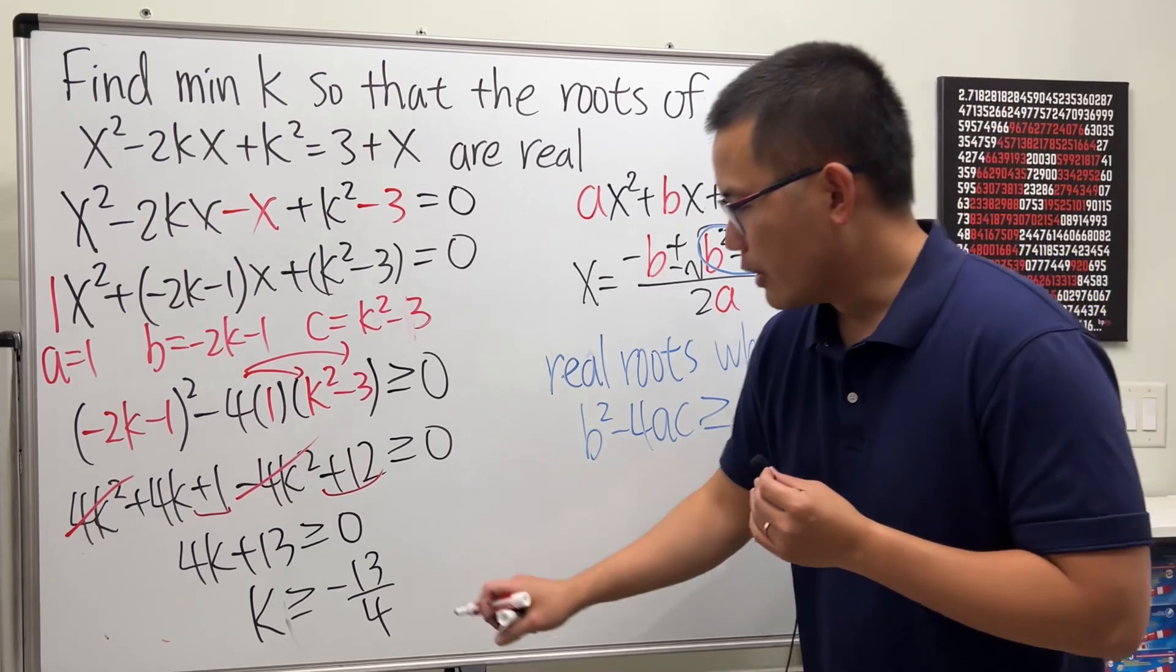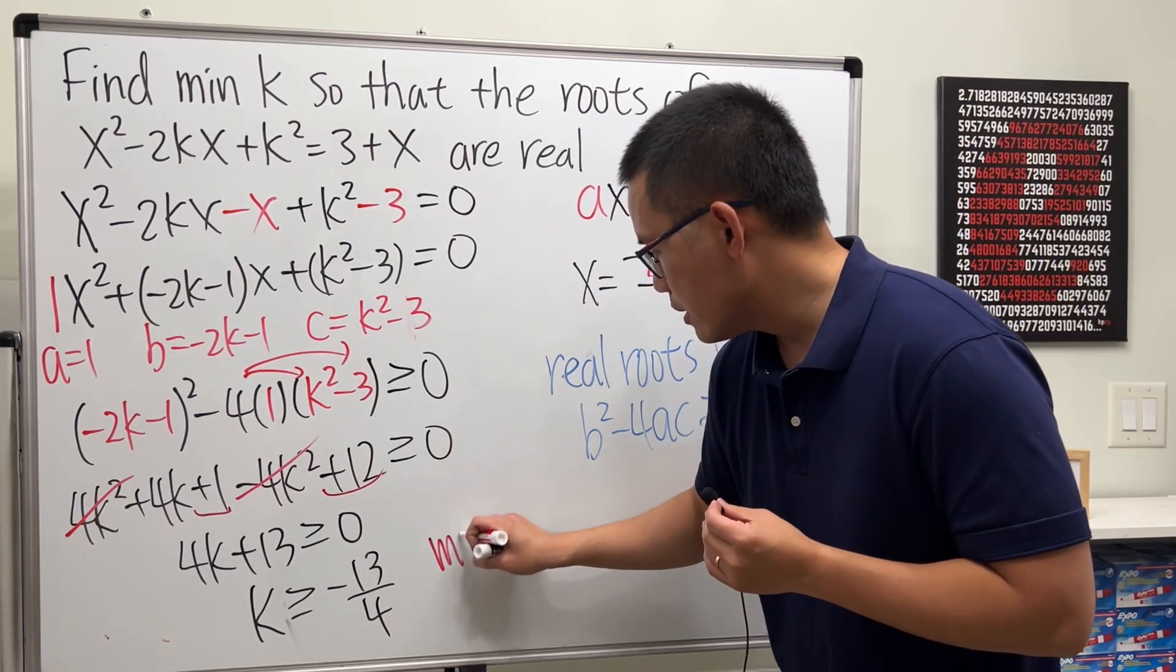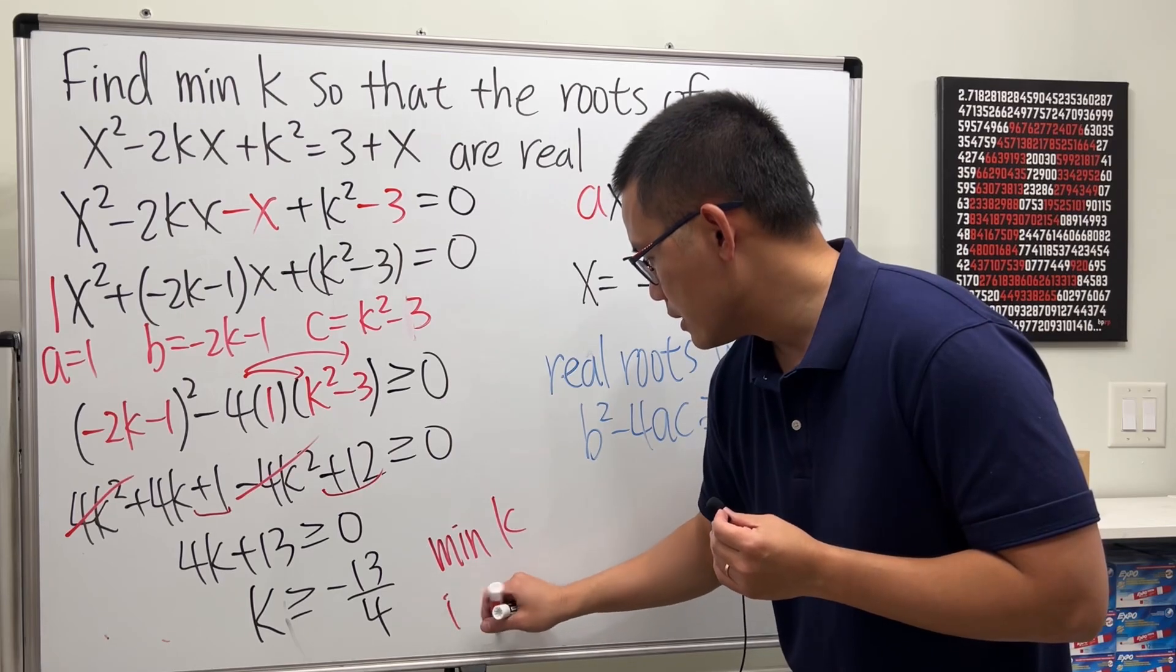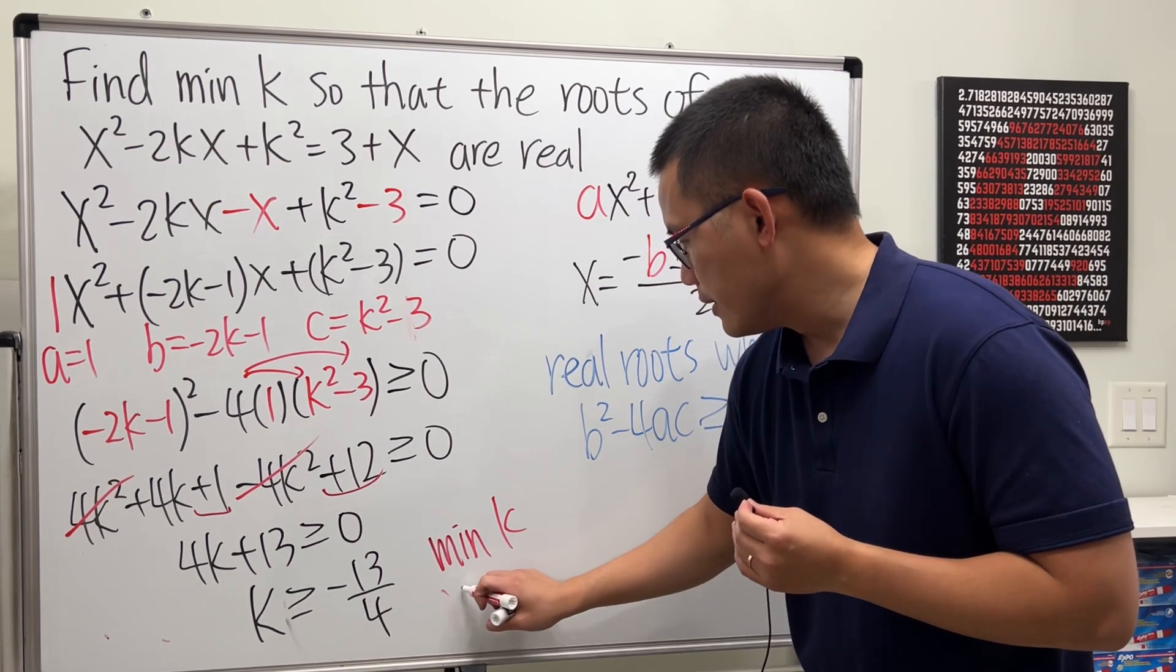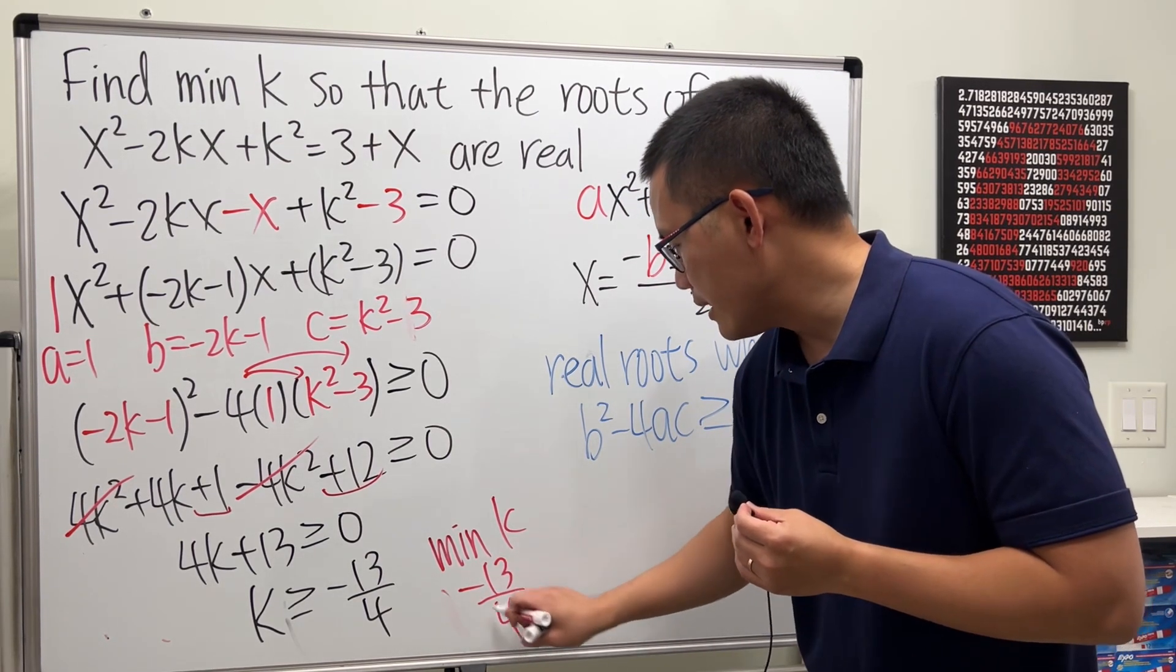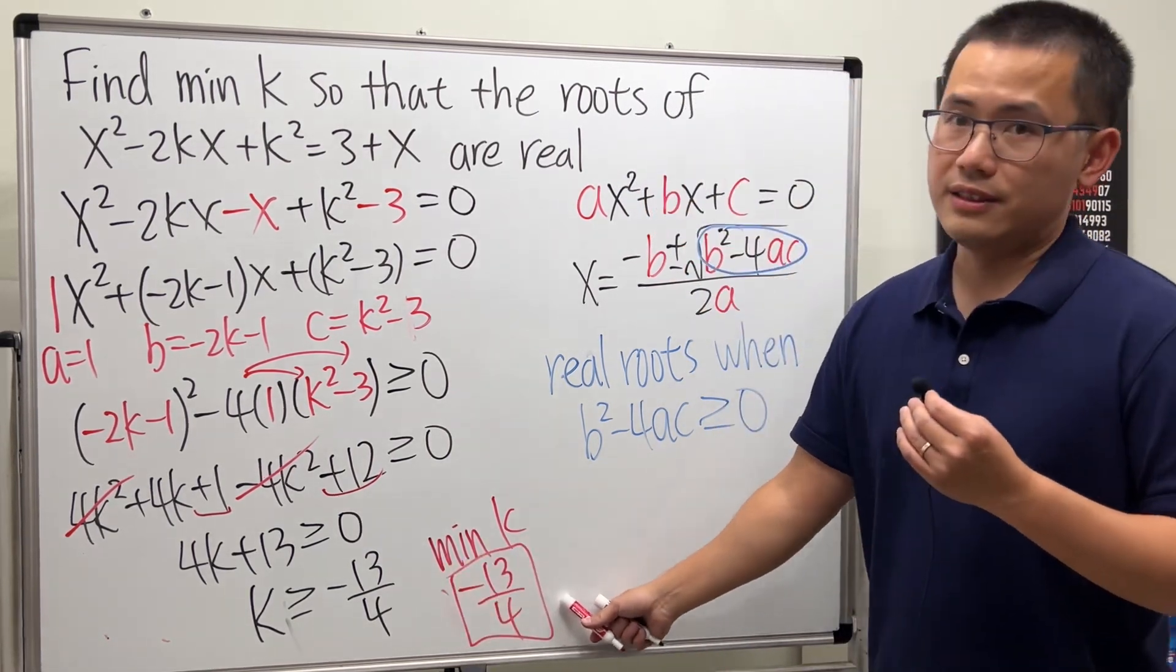So k has to be anything bigger than or equal to negative 13 over 4. So the minimum k is going to be negative 13 over 4, and this right here is the answer.